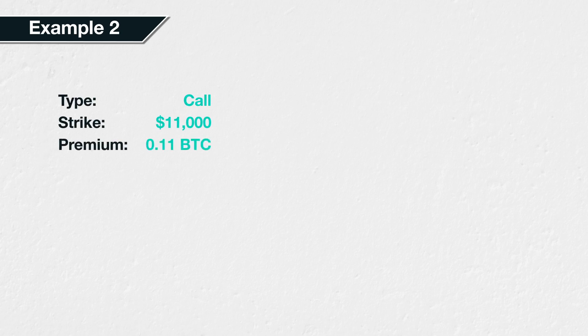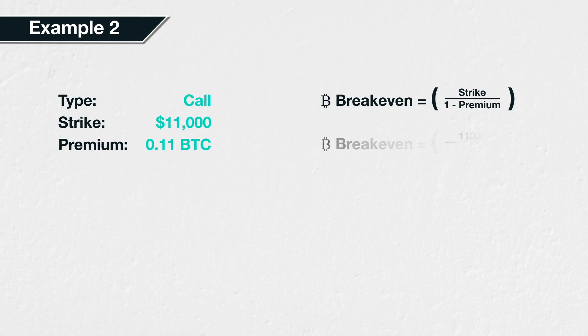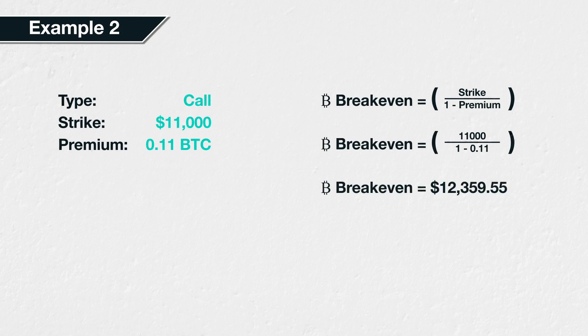Example 2. Suppose we purchase a Bitcoin call option with a strike price of $11,000 and we pay a premium of 0.11 BTC for it. The breakeven is calculated as strike price divided by one minus premium, which is $11,000 divided by one minus 0.11, which gives us a breakeven of $12,359.55. This means if the Bitcoin price is $12,359.55 when the option expires, the trade will have broken even, leaving your Bitcoin balance the same as it was before.